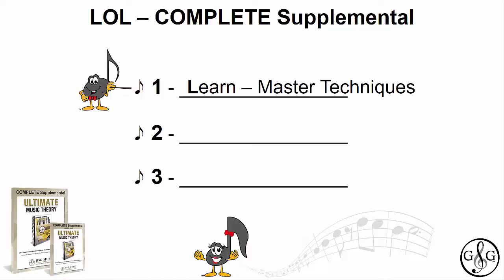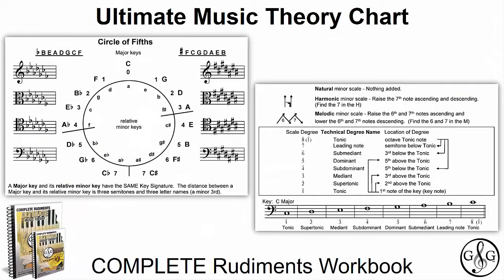LOL Complete Supplemental number two: Organize — simple steps to excel in your studies. Throughout the Ultimate Music Theory program, we have organized simple steps to help you excel. At the back of each rudiments workbook is the UMT chart, which includes the circle of fifths with major keys on the outside and relative minor keys on the inside. We also have mnemonic devices for the harmonic and melodic minor scales.